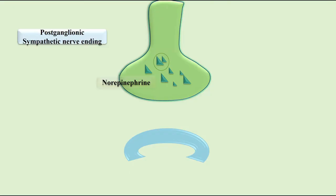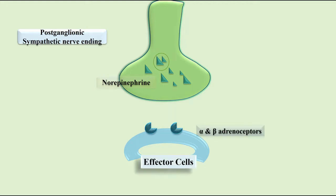Mechanism of Action of Sympathomimetic Drugs. In post-ganglionic sympathetic nerve endings, we have norepinephrine. Norepinephrine acts on alpha and beta adrenoceptors present on effector cells.